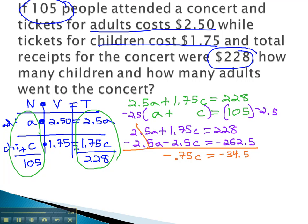Finally, dividing both sides by negative 0.75, we get c, or the number of children, equals 46.